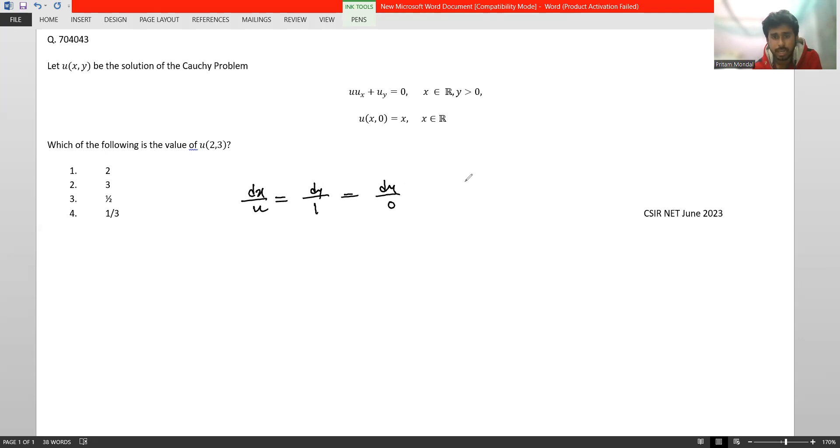From the last ratio, we get u = c1 where c1 is an arbitrary constant. And putting the value of c1 in the first and second ratio, we get dx/c1 = dy.